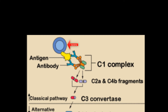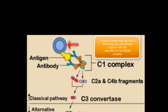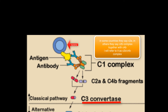After C4B has been bound, another protein C2 will be broken down into C2B and C2A. Together, C4B and C2B will form an enzyme called C3 convertase.